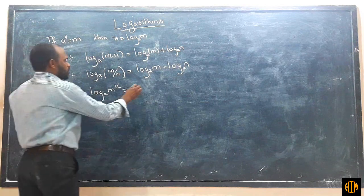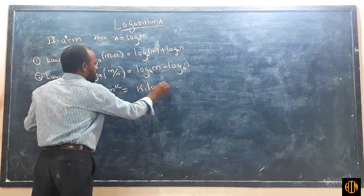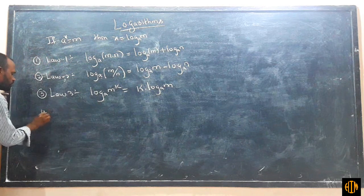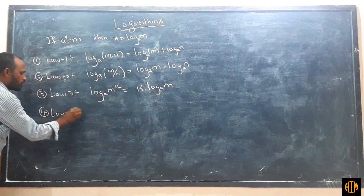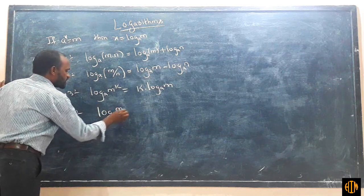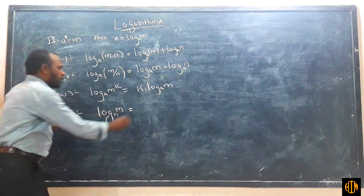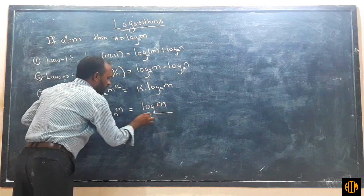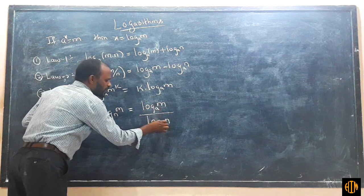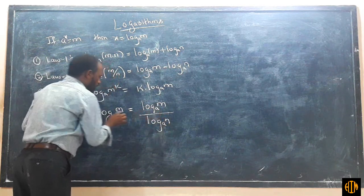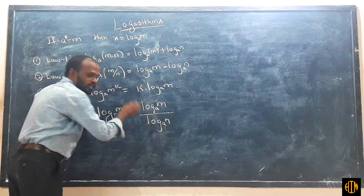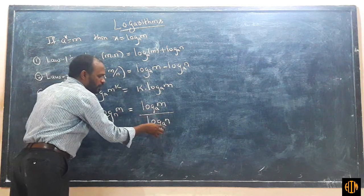Law 3 continued: k log m base a — write the power here. Law 4: log m base n can be written as log m divided by log n. The base depends on the question.